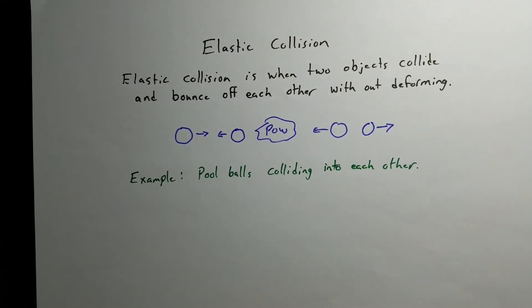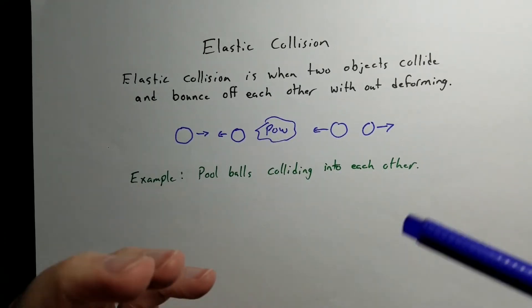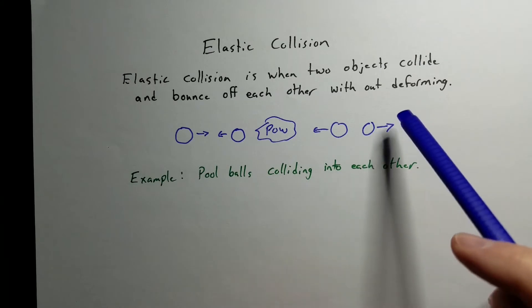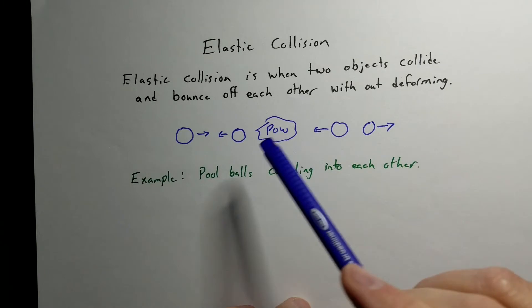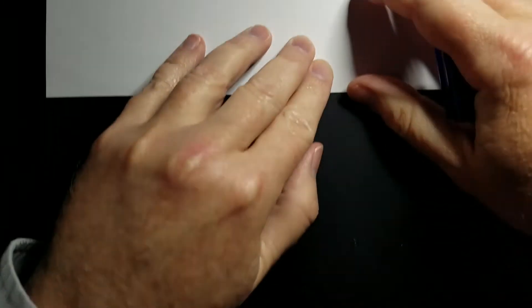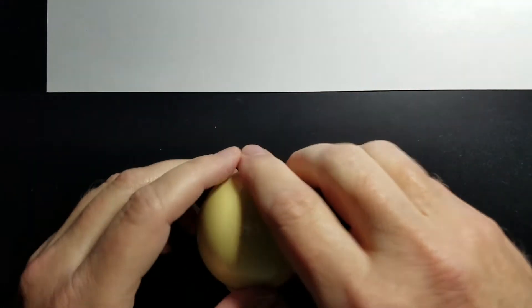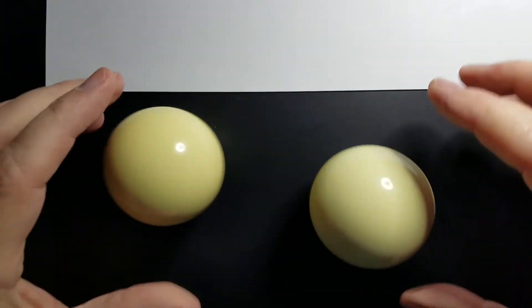Hi everyone, this is Kenny Lee and let's talk about elastic collisions. When I think about elastic, I think about things bouncing back or at least going back to the original shape. With an elastic collision, we have two objects collide and they bounce off each other without deforming — they don't change shape. One of the best examples is pool balls: two pool balls come in, crash into each other, and bounce off.